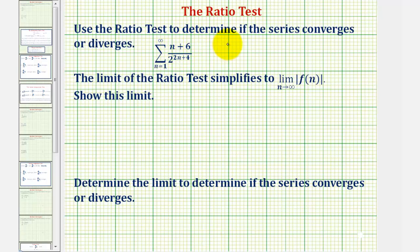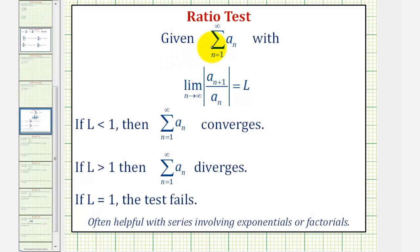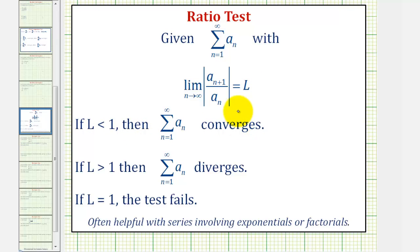We want to use the ratio test to determine if the infinite series converges or diverges. To apply the ratio test, where we have the summation of a_n, we take the limit as n approaches infinity of the absolute value of a_(n+1) divided by a_n, which equals L. If L is less than one, the series converges. If L is greater than one, it diverges. And if L equals one, the test fails and we must apply a different test.